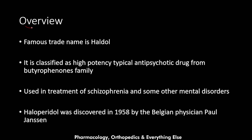Starting with an overview, haloperidol is the scientific name of the medication and the famous trade name is Haldol. It is classified as a high-potency antipsychotic, meaning it is more effective compared with some other antipsychotics. It is a typical antipsychotic — typicals are the old ones discovered in the 1950s, while atypicals are the newer ones discovered in the 1970s. Haloperidol belongs to the butyrophenones family of medications.